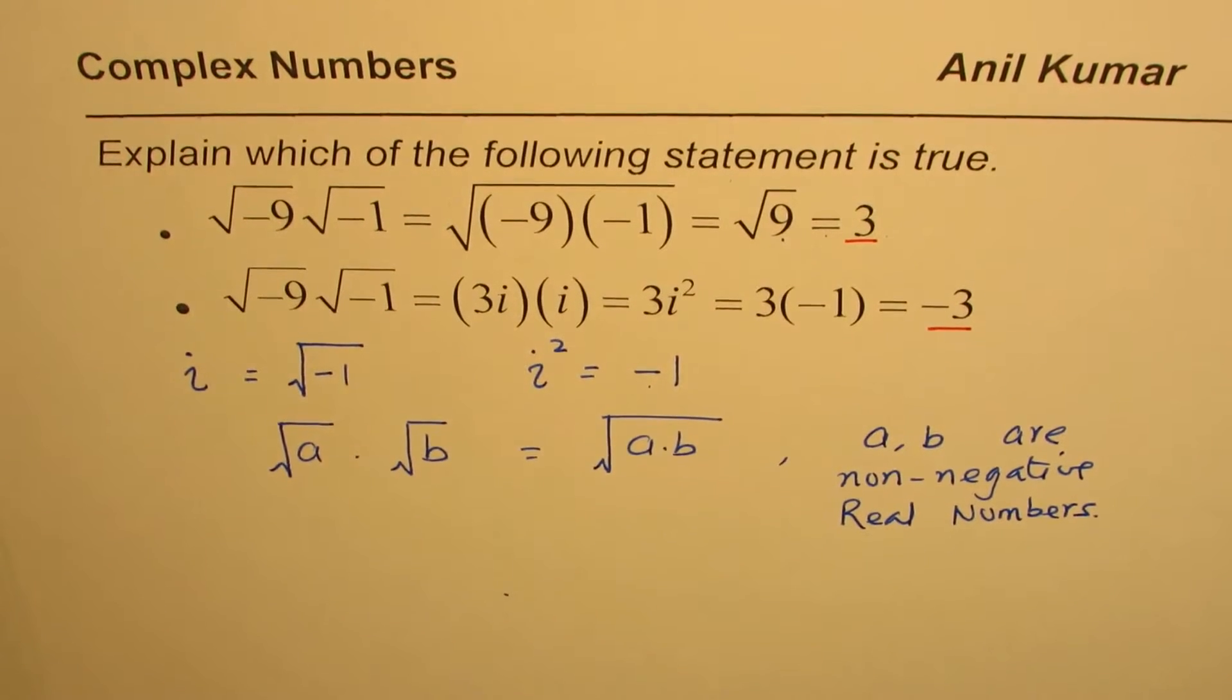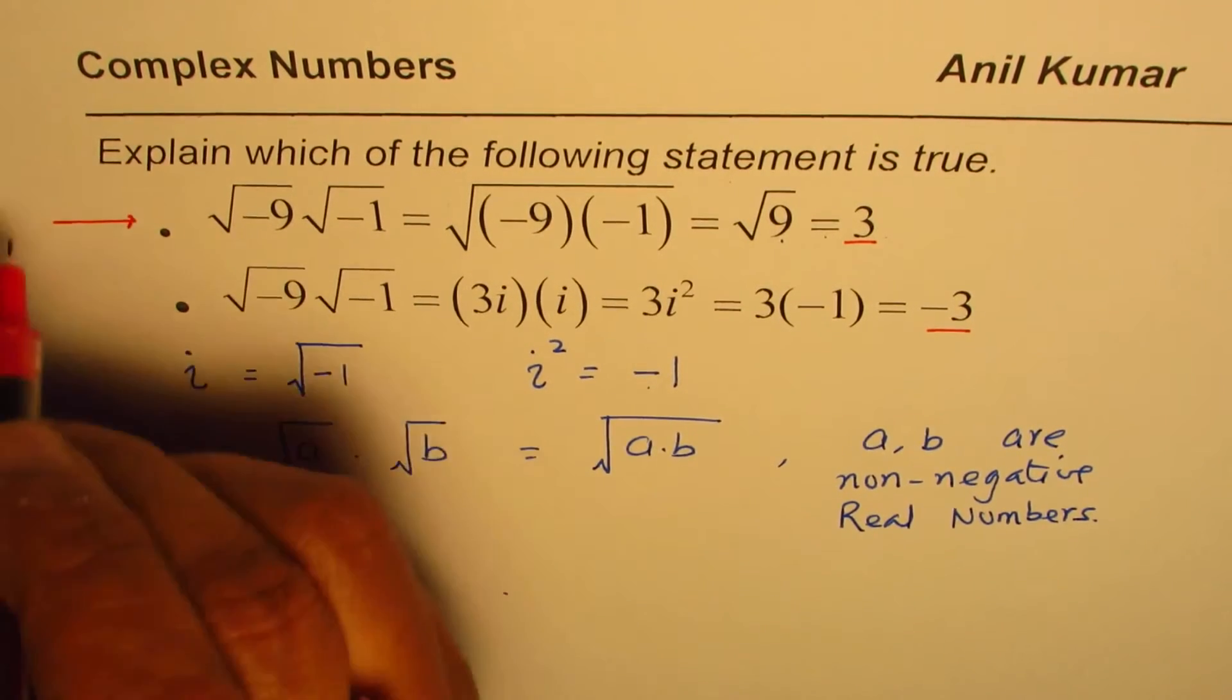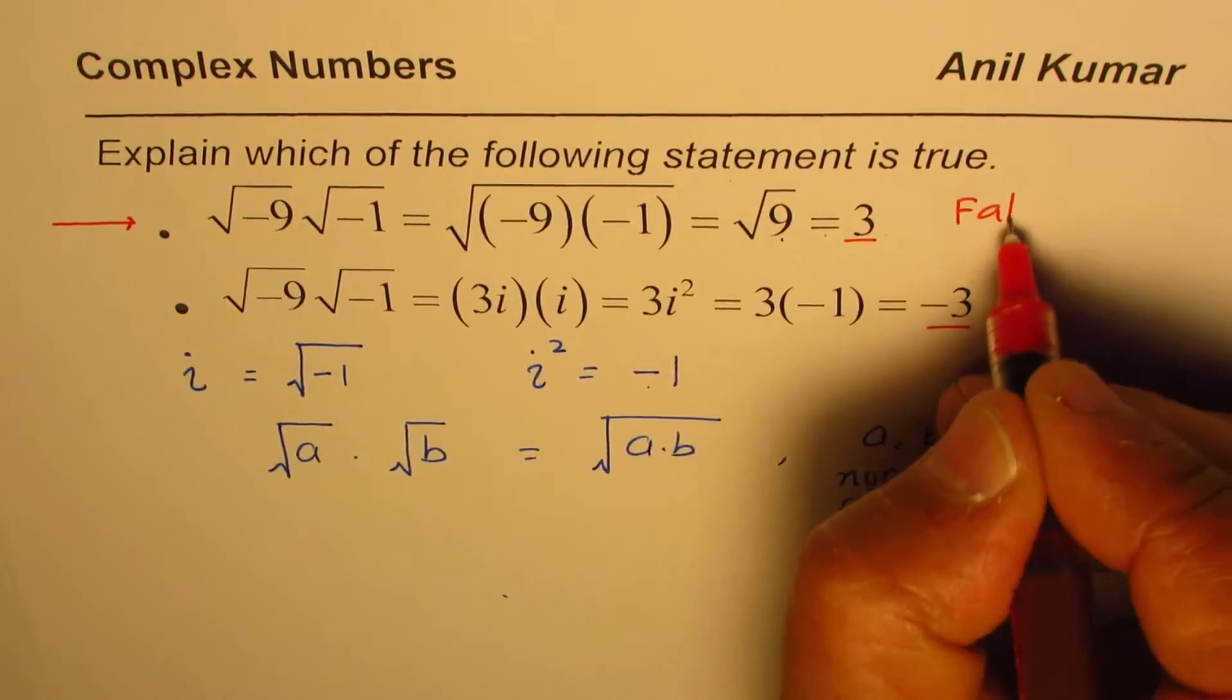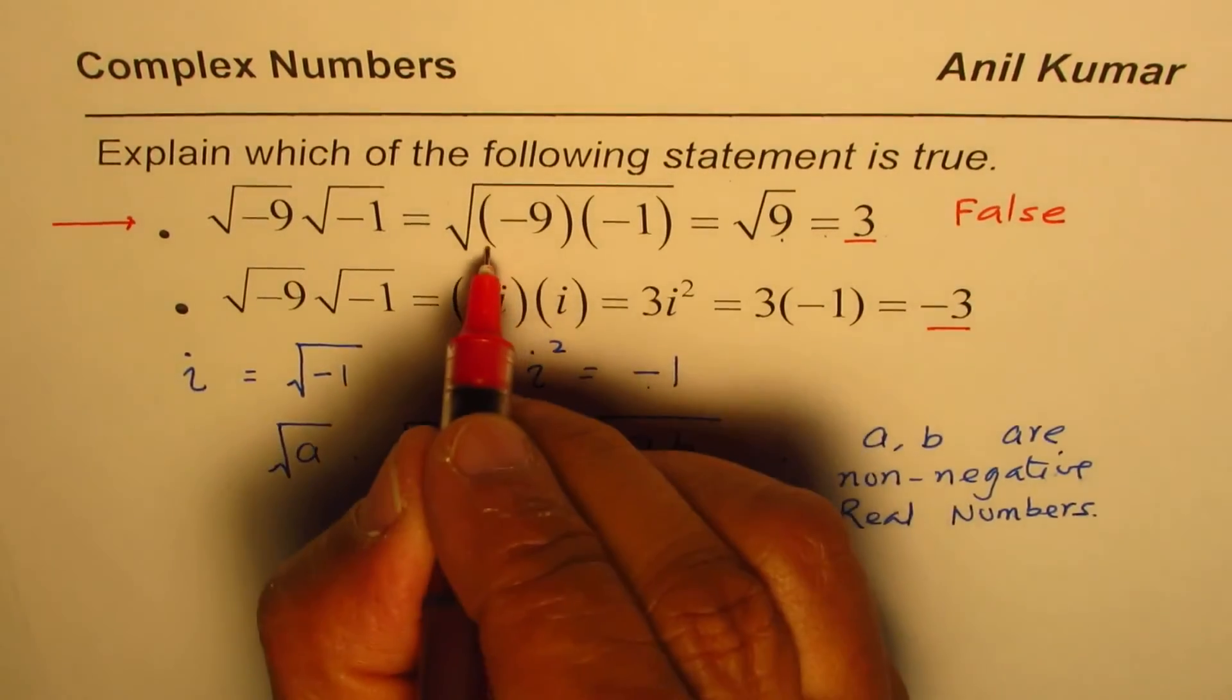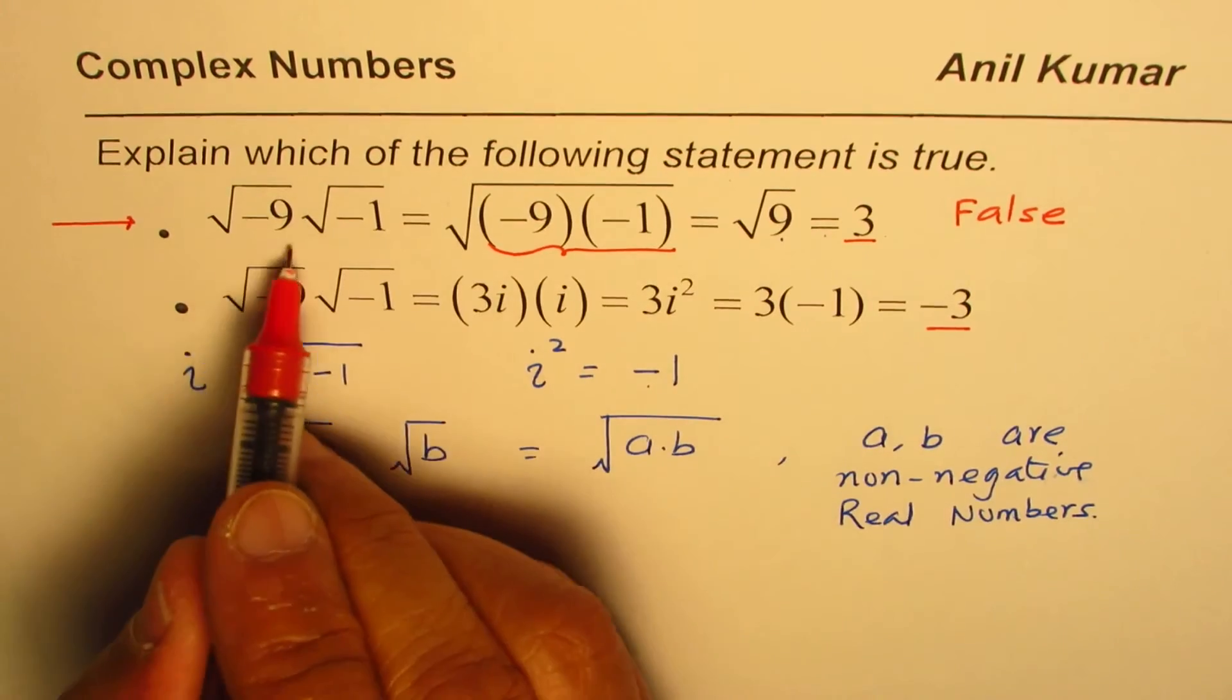Only then this statement is true, otherwise this statement is not true. So we say that this statement is false since this property cannot be applied here.